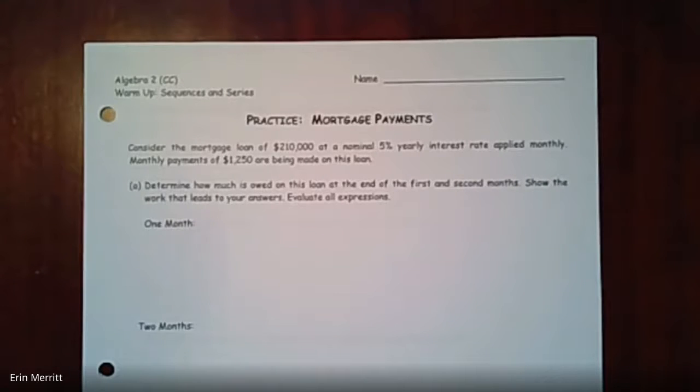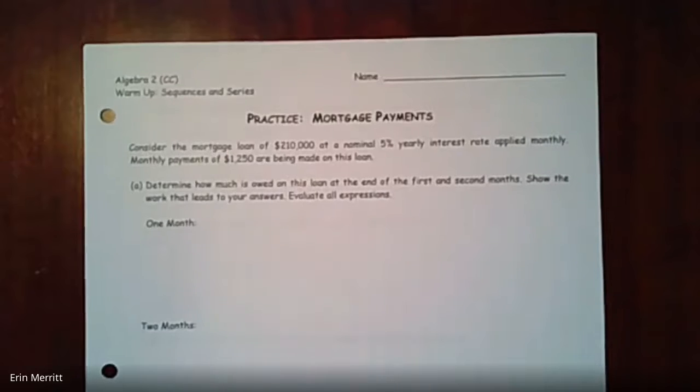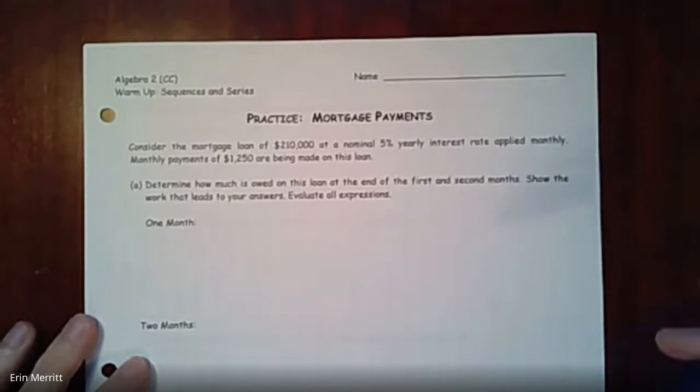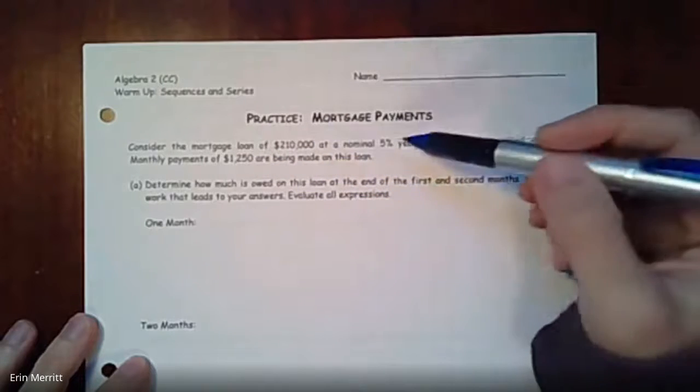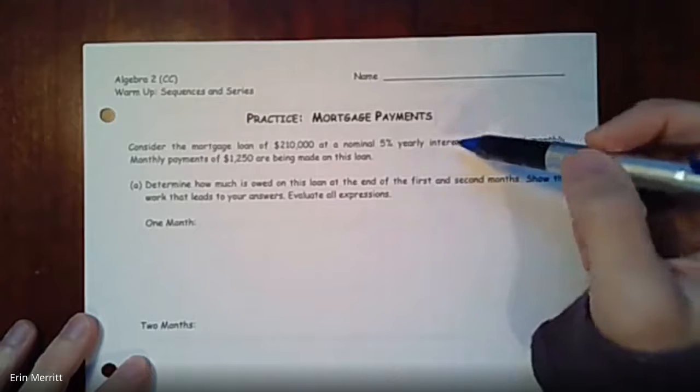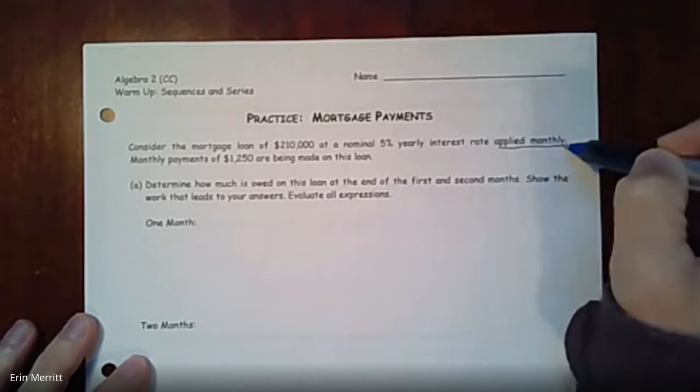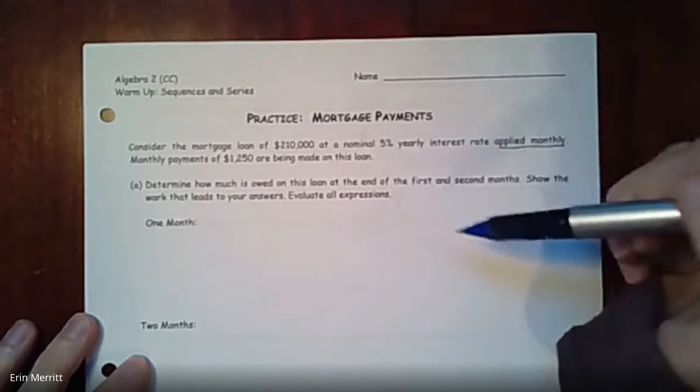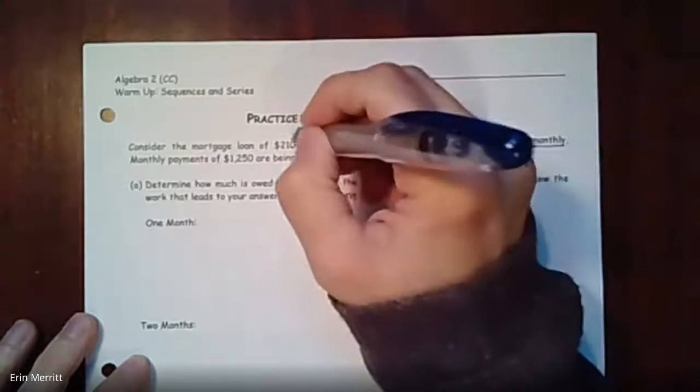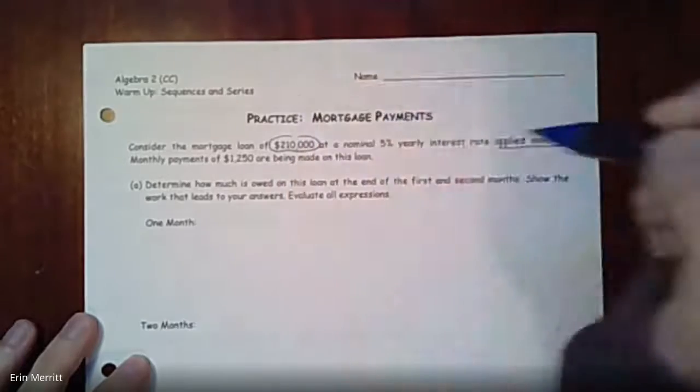Hey guys, we're just going to do some quick practice to kind of send us into our review day. The first one gives you a setup where you can practice some of those mortgage payment questions. It says consider the mortgage loan of $210,000 at a nominal 5% yearly interest rate that's applied monthly. Monthly payments are $1,250 are going to be made on the loan.